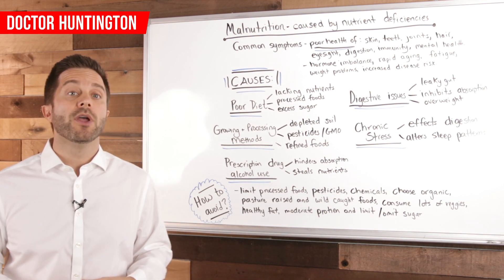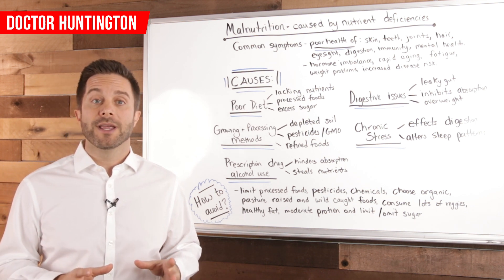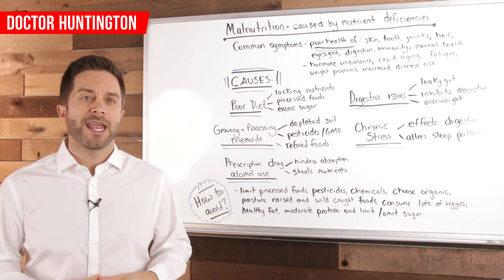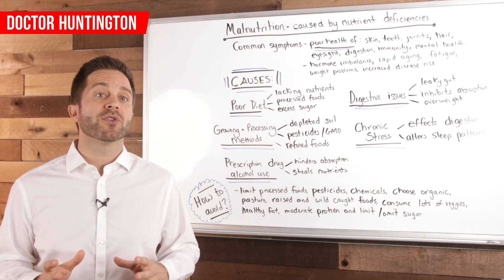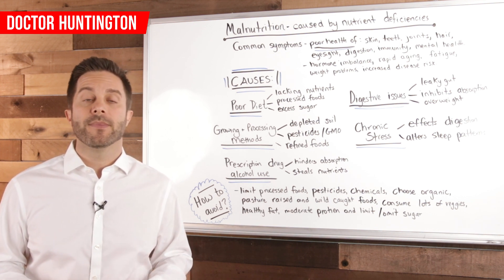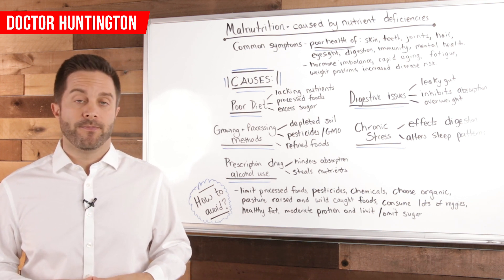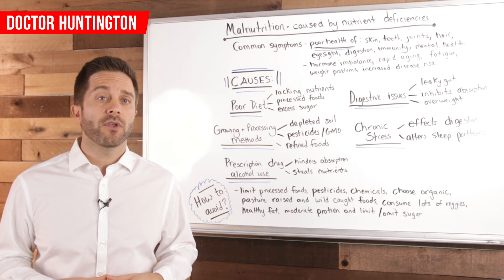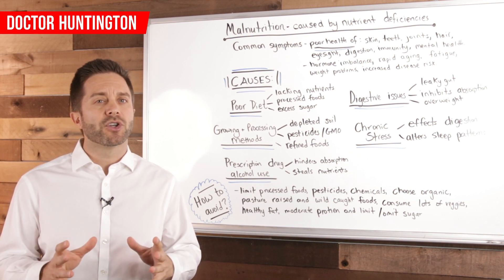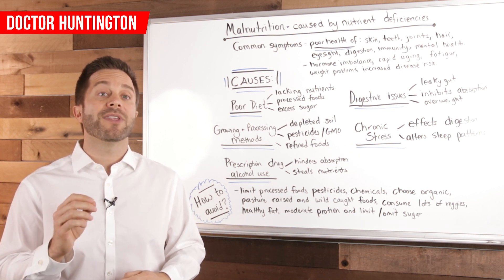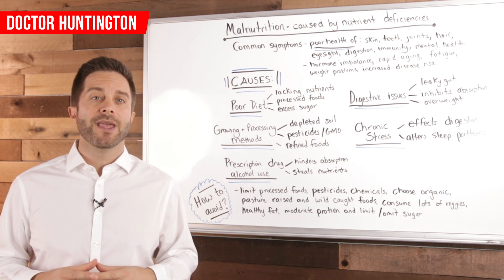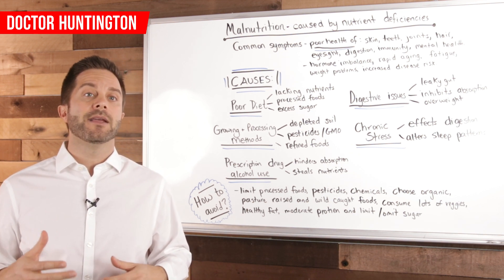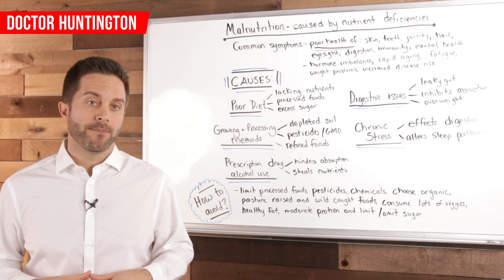For example, sugar steals nutrients and affects the absorption of calcium and magnesium. Excess fructose — which is a type of sugar — interrupts the enzymes that help to synthesize vitamin D in your body.